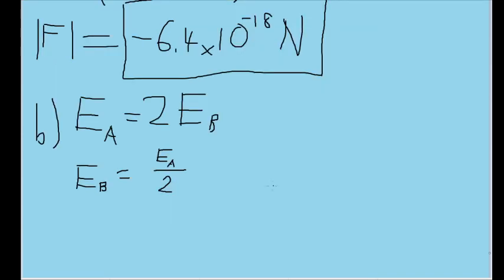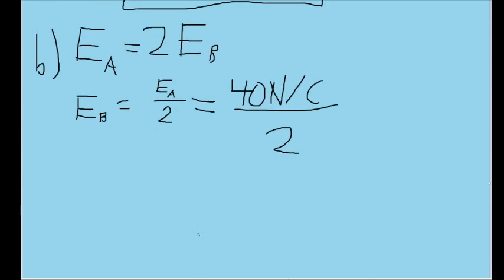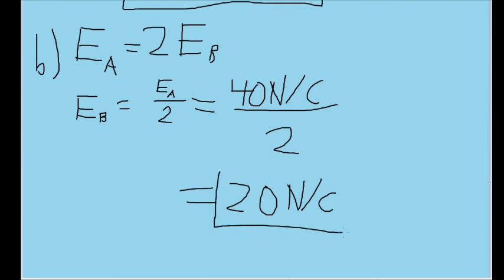From this, we can infer that E sub B is equal to E sub A divided by 2, which tells us that the field's magnitude at point B is equal to 40 newtons per coulomb divided by 2, or 20 newtons per coulomb.